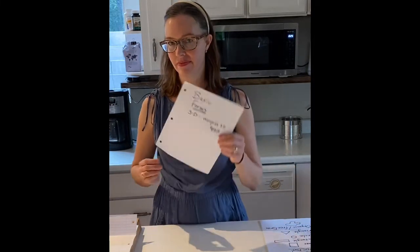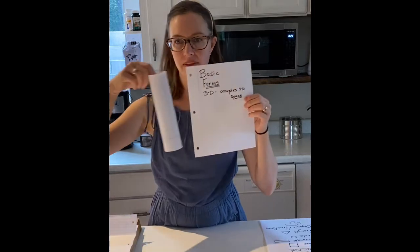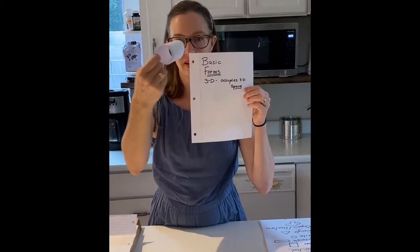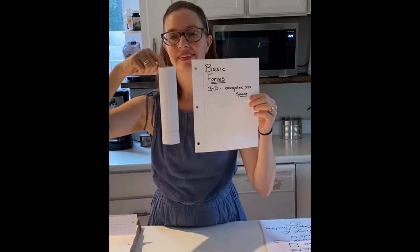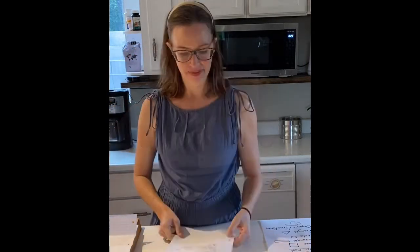A basic form is when something like a circle got made into three dimensions with height, width, and depth. Let's talk about how to make some basic form.